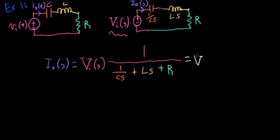So first I'm going to multiply the numerator and the denominator by S, because I want to really clear out that S in the denominator. So I'm going to write S over 1 over C plus L S squared plus R S.